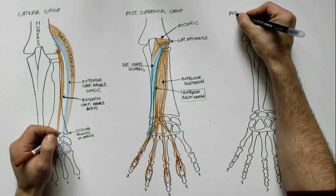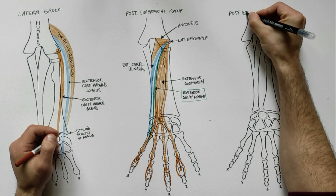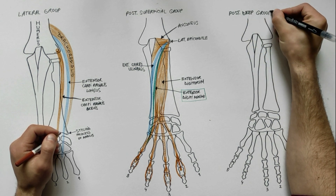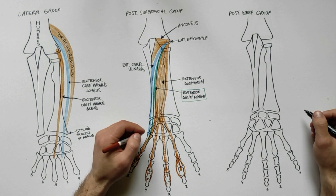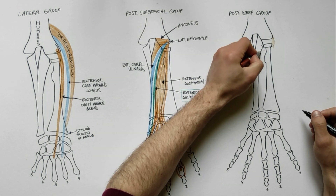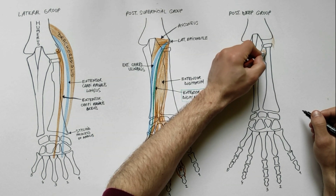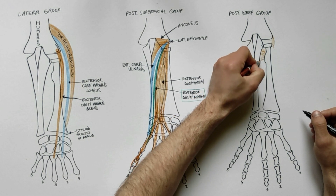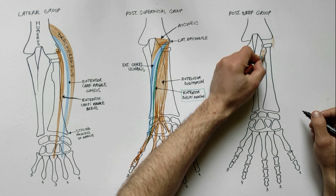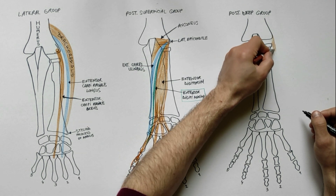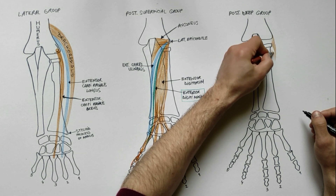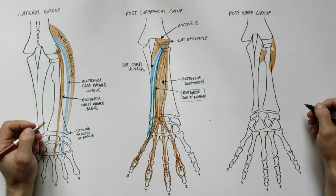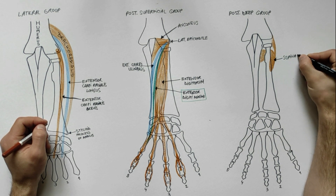The last group of muscles in the posterior compartment of the forearm is the posterior deep group, which contains five muscles. The first muscle is the supinator, which arises from the lateral epicondyle of the humerus, the supinator crest of the ulna, the radial collateral ligament, and the annular ligament. Its insertion is into the upper one-third of the lateral surface of the radius.